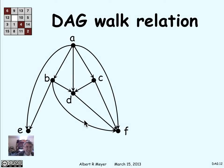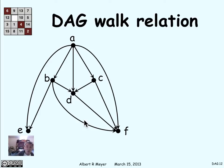When looking at a DAG, we're usually interested in just the walk relation of the DAG. Many different DAGs can have the same walk relation, so it's natural to ask: what's the most economical one? Is there a minimum DAG that defines a given walk relation?